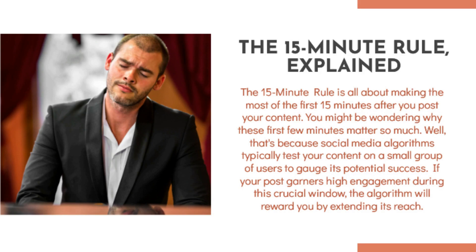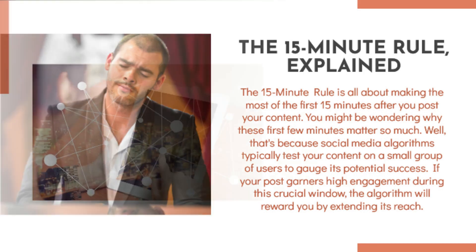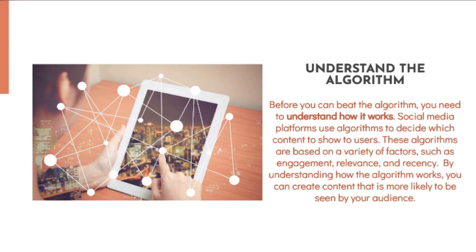If your post garners high engagement during this crucial window, the algorithm will reward you by extending its reach. So how do you optimize your content for the 15-Minute Rule? First, craft compelling hooks. To get people engaged with your content right from the start, you need to grab their attention immediately. Spend time crafting hooks that are irresistible and leave your audience wanting more.